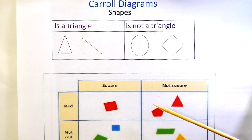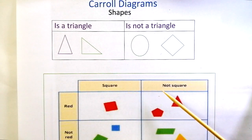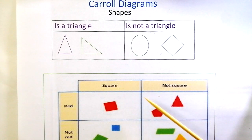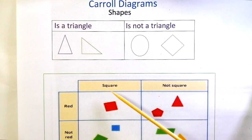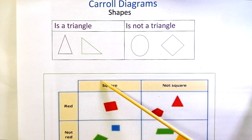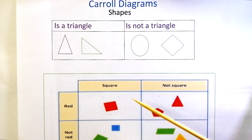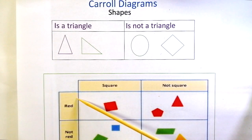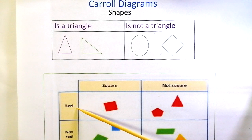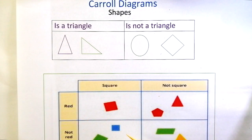Now let's see the other Carroll diagram. This is also about shapes but it is done with two sorting rules. One is we need to check whether the shape is a square or not a square. The second sorting rule is to check whether the shape is in red color or it is not red. This diagram is sorted with two sorting rules.